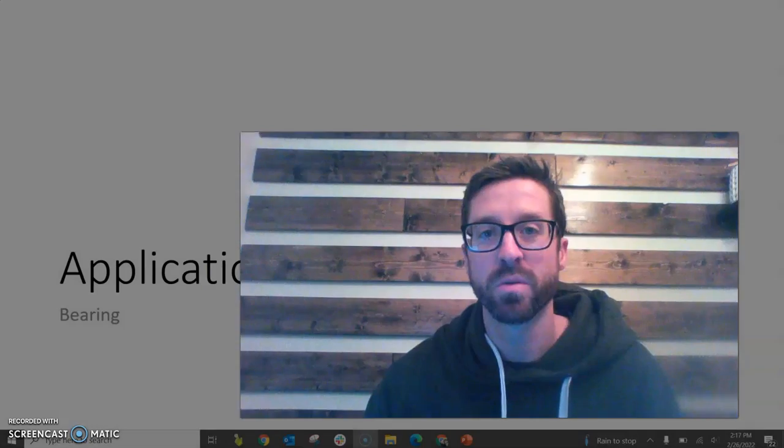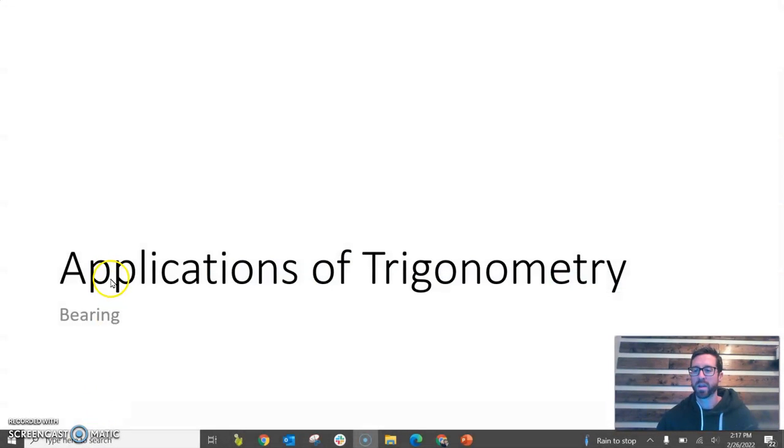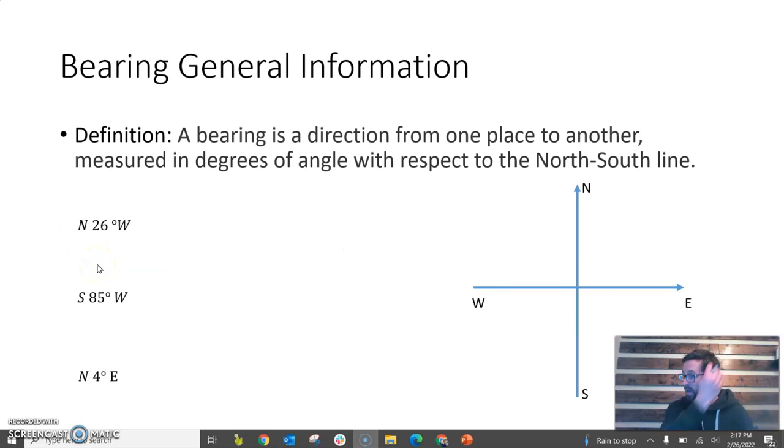Hey folks, in this short video we're going to look at right triangle trigonometry problems involving bearing. What bearing is, it's kind of a method of finding a direction or describing a direction that's used often in sailing. And so what a bearing is, it's a direction from one place to another measured in degrees of an angle with respect to the north-south line.